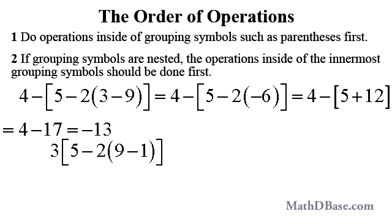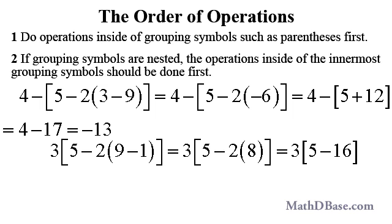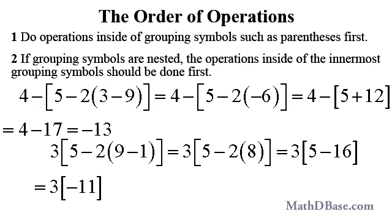If we have this expression, also with a single layer of nesting, first subtract 1 from 9 to get 8. Multiply negative 2 and 8 to get negative 16. Then add 5 and negative 16 to get negative 11. Finally, multiply 3 and negative 11 to get negative 33.